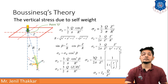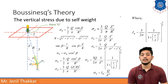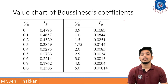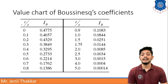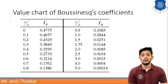Iᴮ is the Boussinesq constant, equal to (3/2π) × 1 / [1 + (r/z)²]^(5/2). This graph shows the values of Boussinesq coefficients. Since the r/z ratio involves radial distance and depth, we can find Iᴮ at every point. A Boussinesq coefficient table has been prepared and can be used in various field problems.